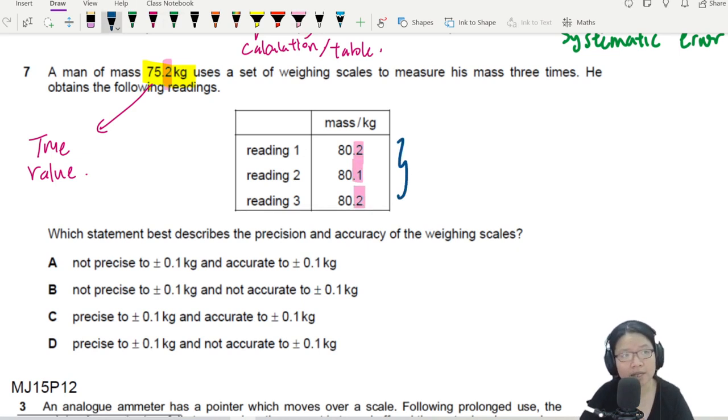From here, I can tell that the smallest reading, which is related to precision, is 0.1 kg. So it is precise to 0.1 kg.